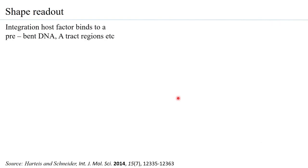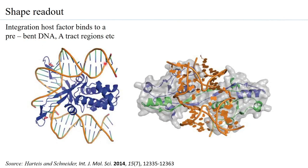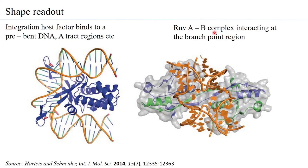In some cases shape readout is more important than base readout. The integration host factor (IHF) binds to a pre-bent DNA, recognizing an already bent A-tract. The RUVAB complex, responsible for homologous recombination, specifically binds to the Holliday junction branch point. This interaction is highly specific and related to the structure of the DNA rather than directly to the sequence — although the sequence is ultimately responsible for creating that structure. It is very difficult to fully delineate DNA sequence from DNA structure.